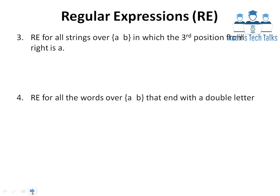Example 3: Regular expression for all strings over {A, B} in which the third position from the right is A. 'From the right' means from the end side. So if this is the third position from the right, the second position is next, and the first position is last. On the second and first right positions there can be A or B, but on the third position it must be A.